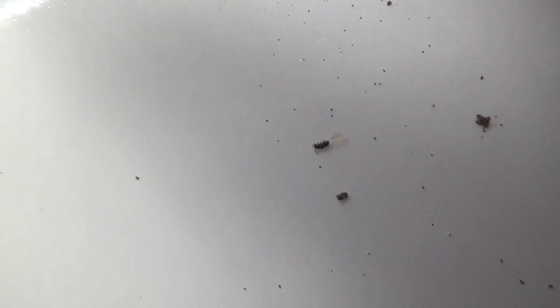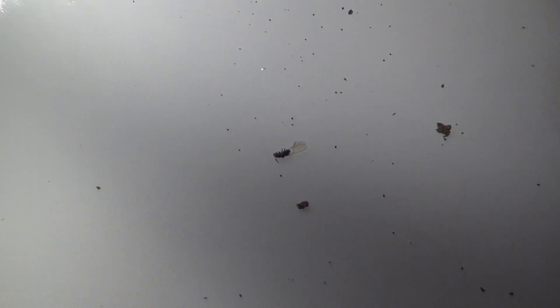Where you see the winged termites, those are the swarmers. They come out to let you know that you have workers and soldiers doing the damage.